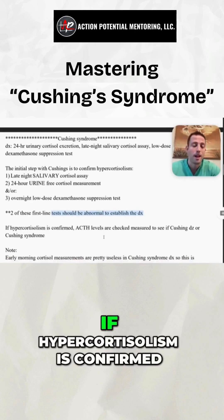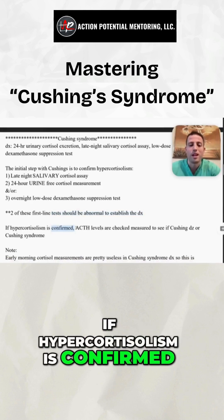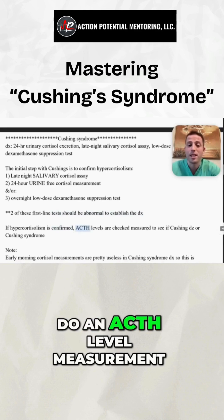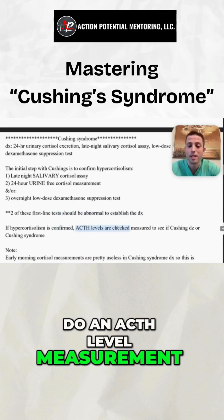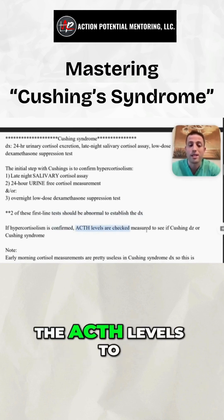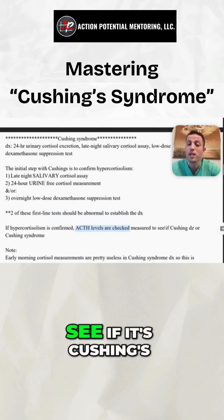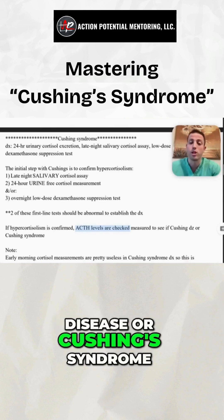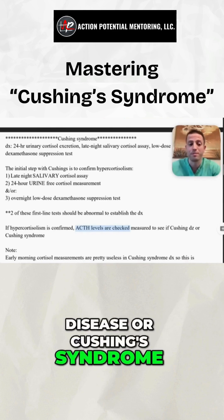If hypercortisolism is confirmed, the next step is to do an ACTH level measurement. You want to check ACTH levels to determine whether it's Cushing's disease or Cushing's syndrome.